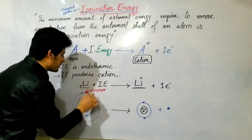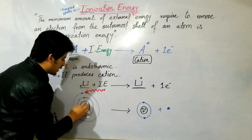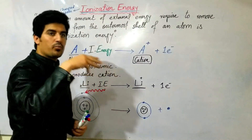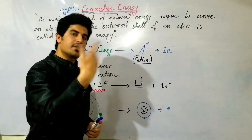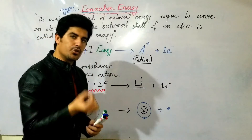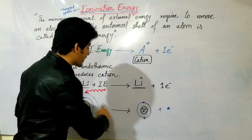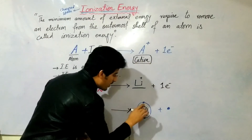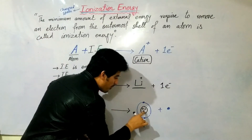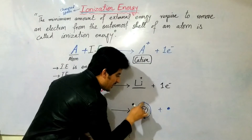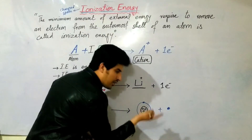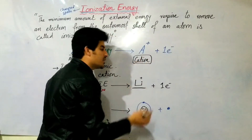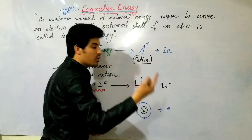The lithium atom was neutral — three protons and three electrons, so plus three minus three equals zero, no charge. But after ionization, one electron is removed, so only two electrons remain while there are still three protons.